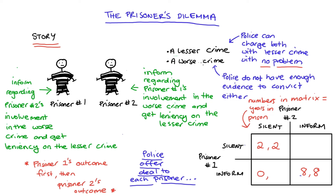But prisoner two gets no leniency for the lesser crime and also gets implicated in the worst crime by prisoner one, so they get more jail time than eight years — let's say 12 years. Lastly, prisoner one could stay silent while prisoner two informs on prisoner one. In this case prisoner one ends up with 12 years for involvement in both crimes, while prisoner two goes completely free — full clemency on the lesser crime and not implicated in the worst crime. That's our matrix of outcomes. When solving this game, our prisoners simply prefer the lesser number of years in jail — the smaller the number, the better.